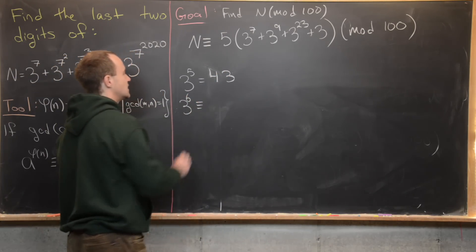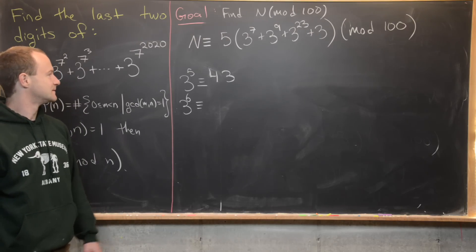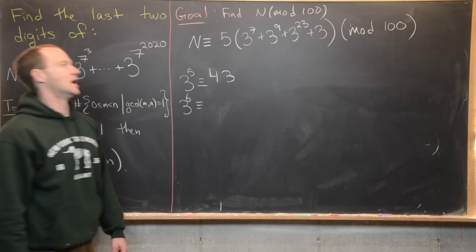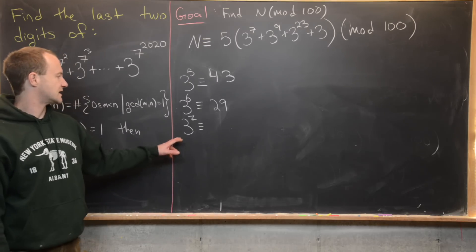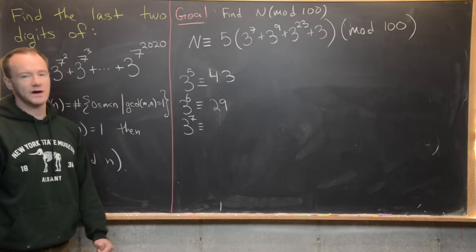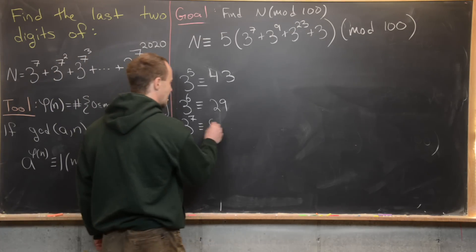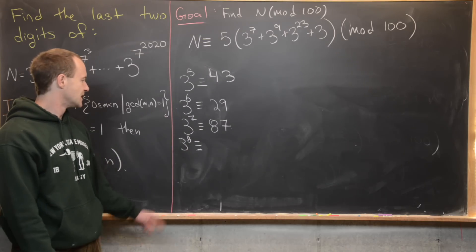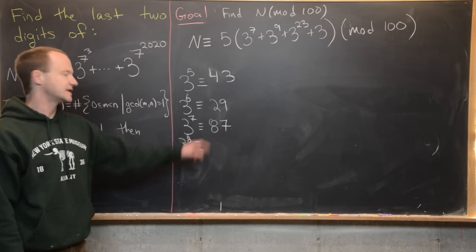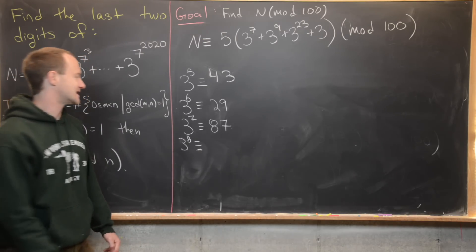Then 3 to the 6th is 3 times 3 to the 5th, so 3 times 43 equals 129, and 129 mod 100 is 29. Then 3 to the 7th is 3 times 29. That's 60 plus 27, giving us 87. For 3 to the 8th: 3 times 87 — 3 times 80 is 240, reduced mod 100 to 40, and 3 times 7 is 21, so 3 to the 8 is congruent to 61 mod 100.